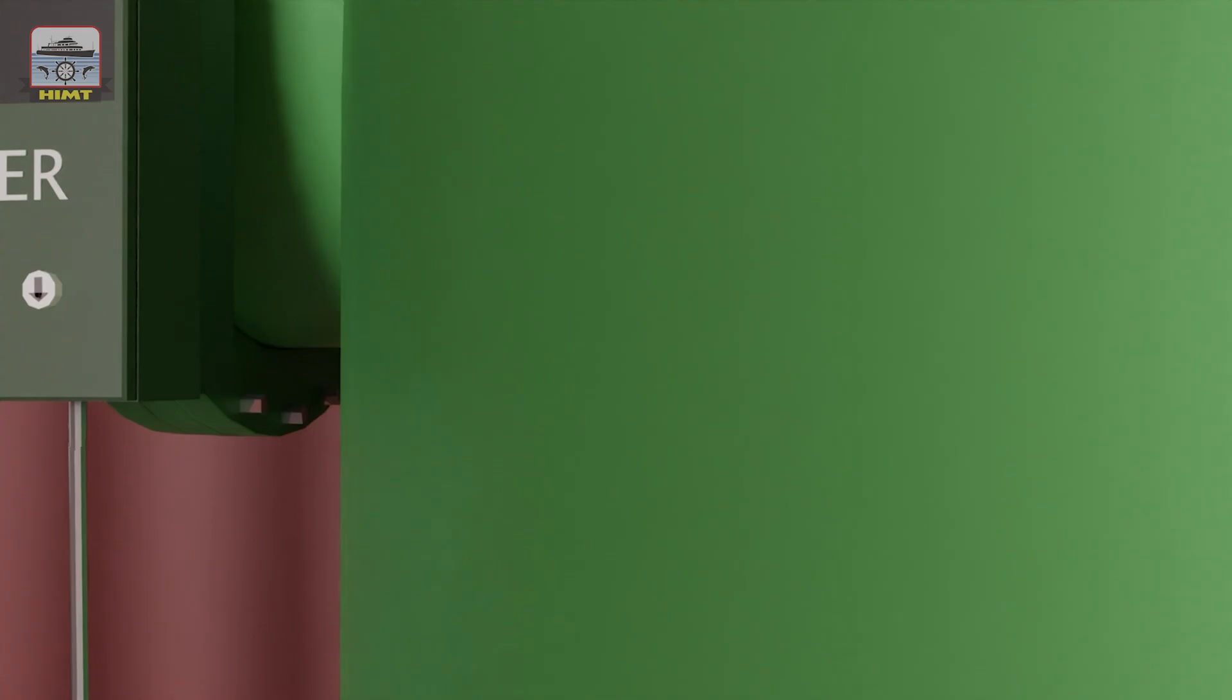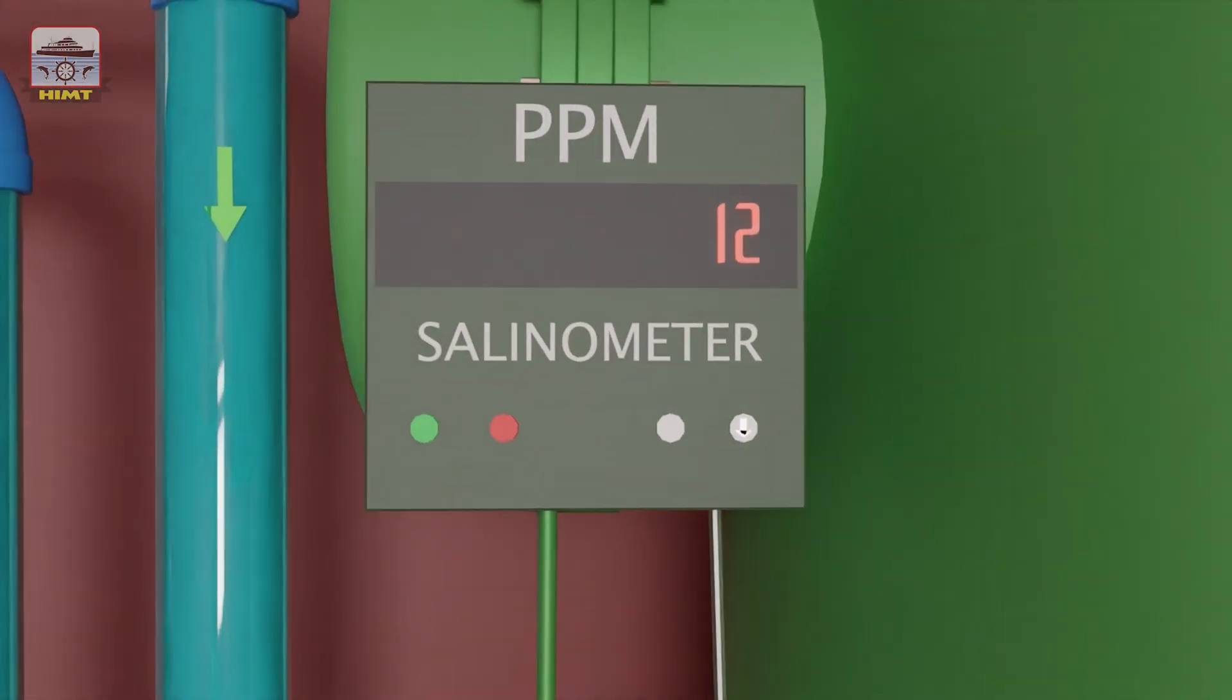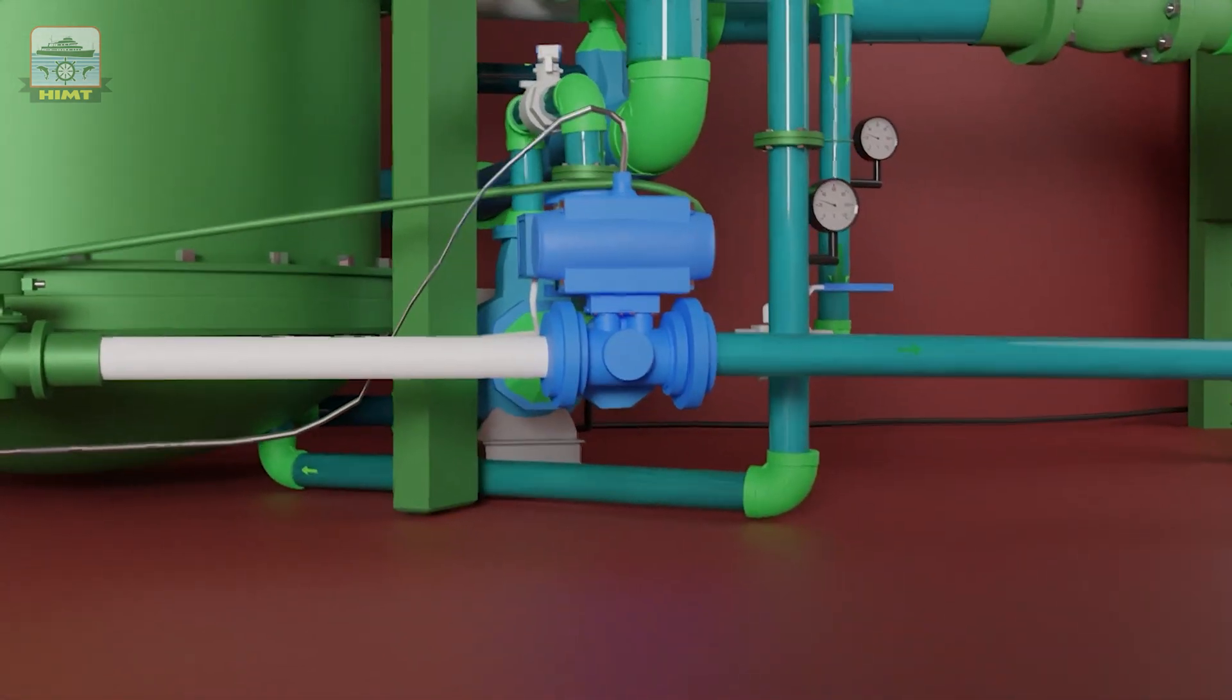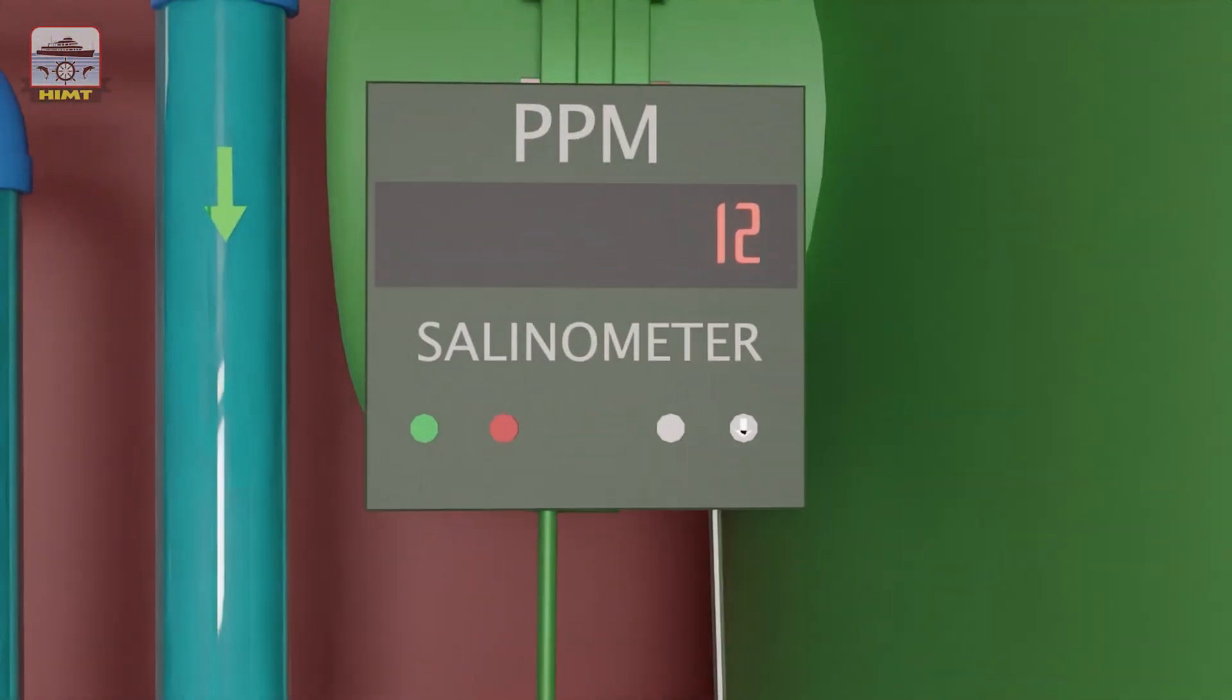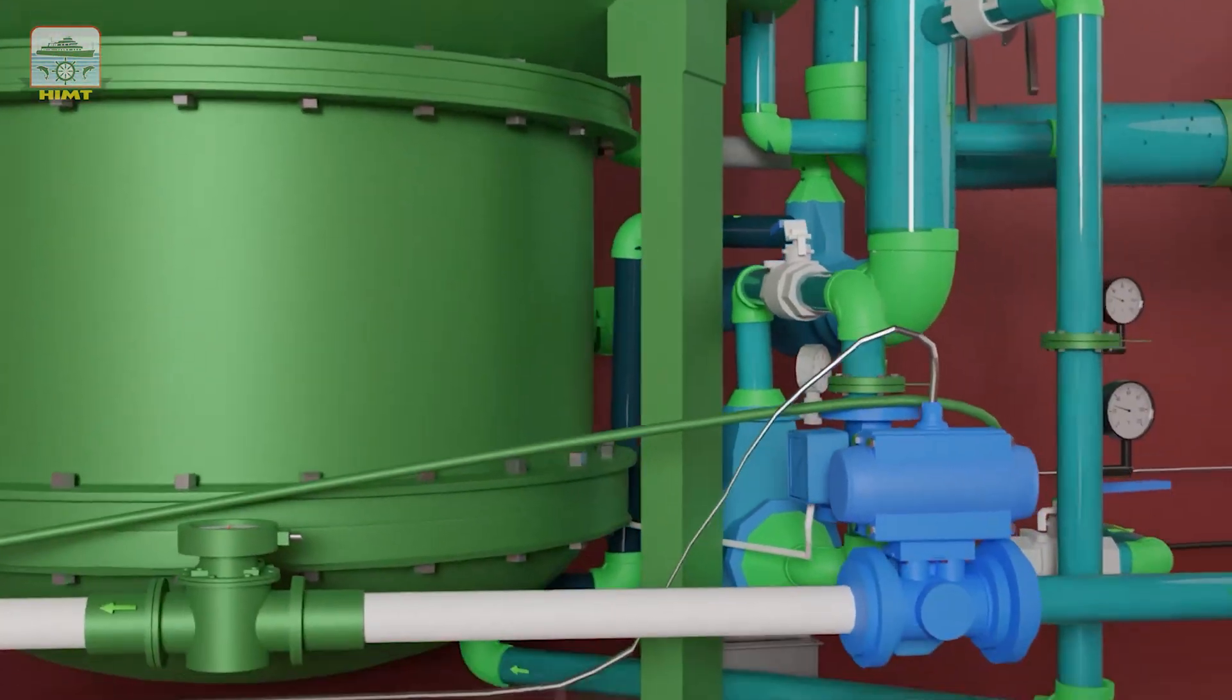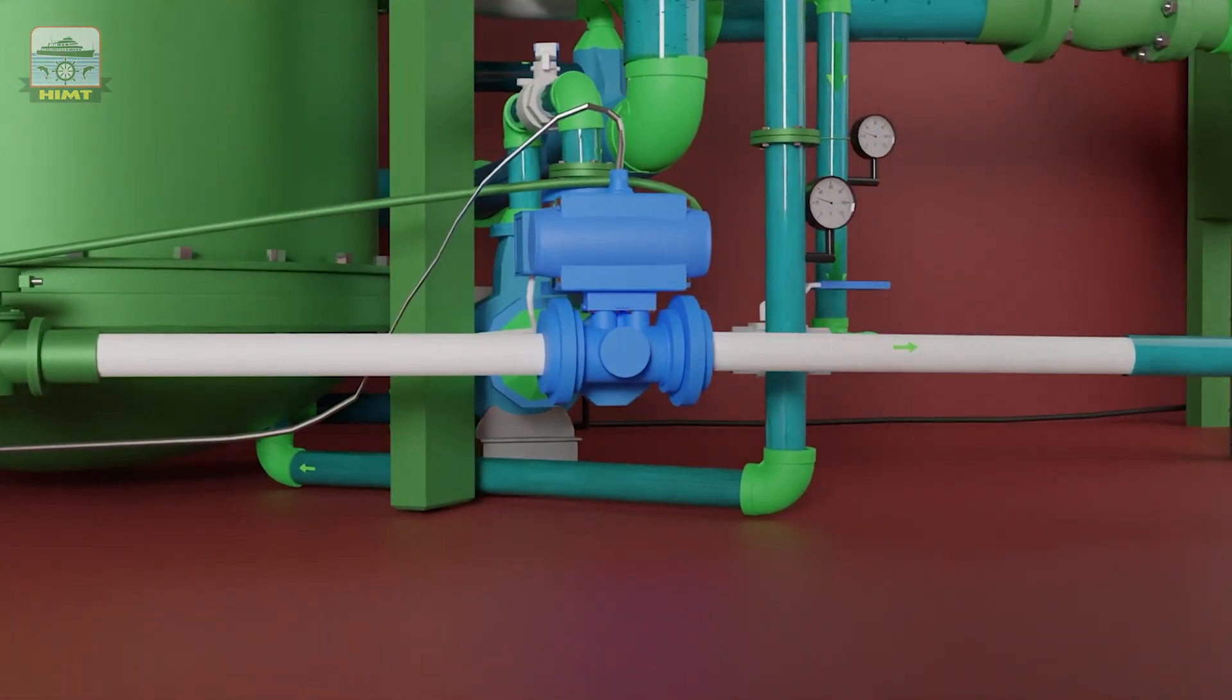After that, observe the salinometer reading, which is set to give an alarm when the salinity of the distillate exceeds 10 ppm. When the salinity is more than 10 ppm, the three-way valve transfers the distillate either to bilge well or back to the fresh water generator shell. When the salinity drops to less than 10 ppm, the three-way valve transfers the distillate to fresh water storage tank.